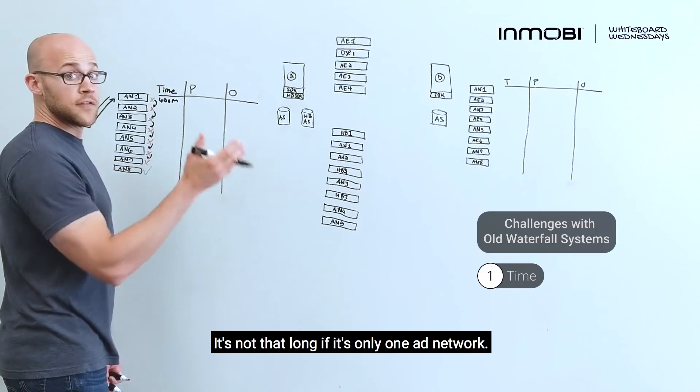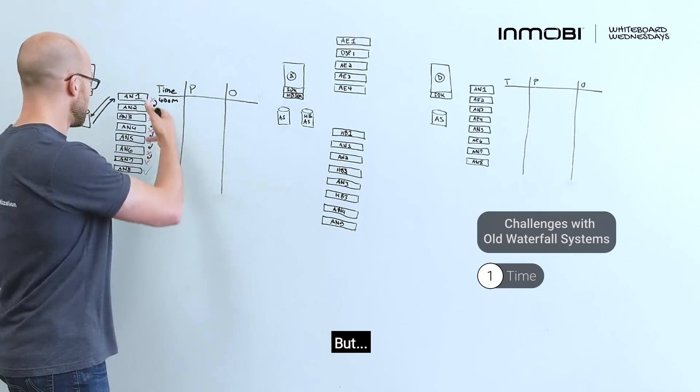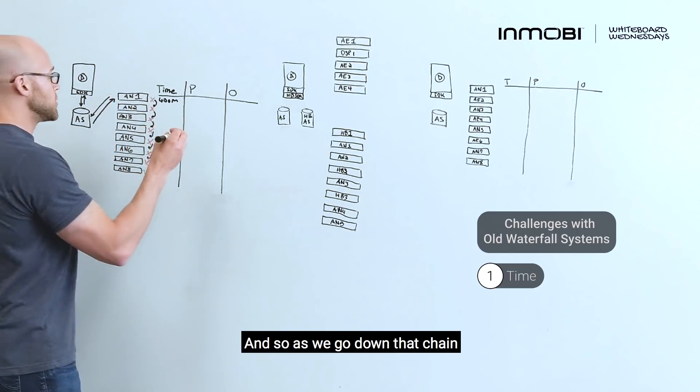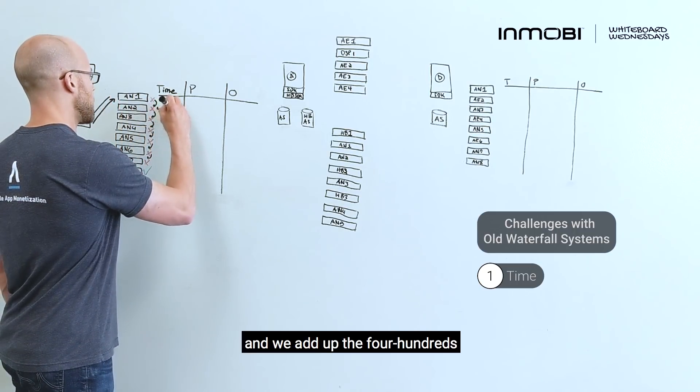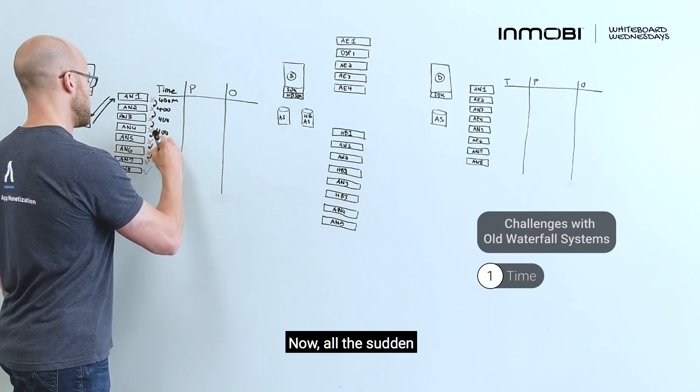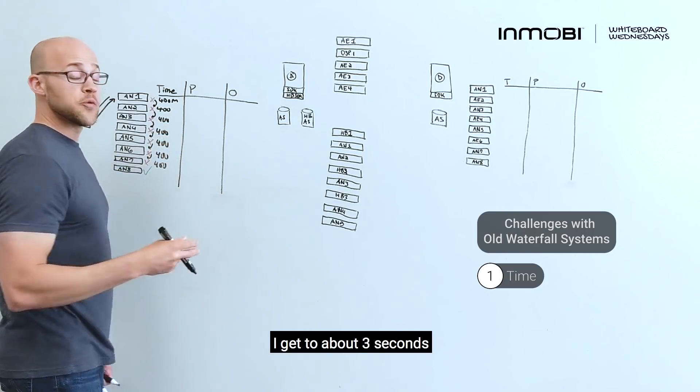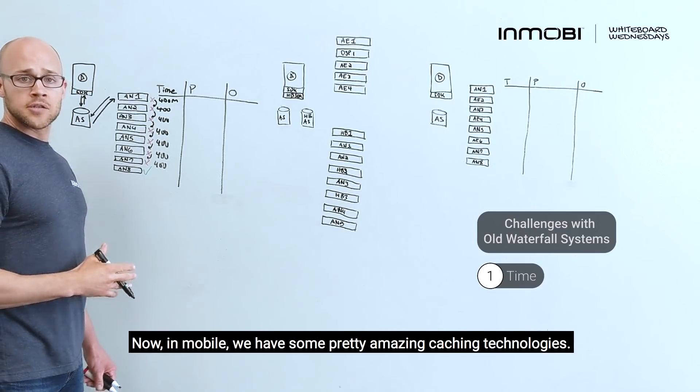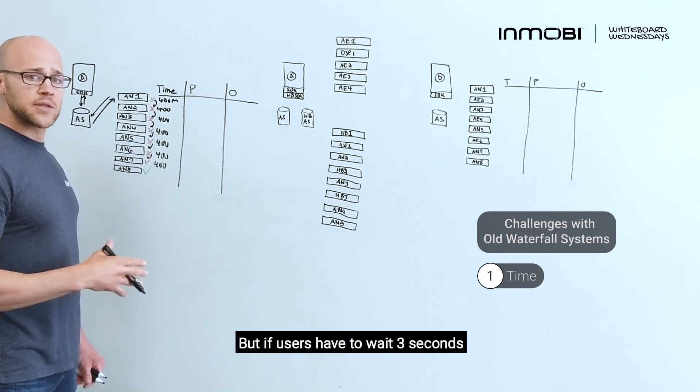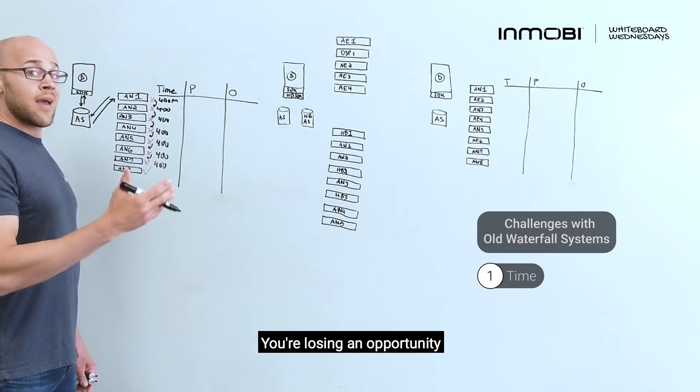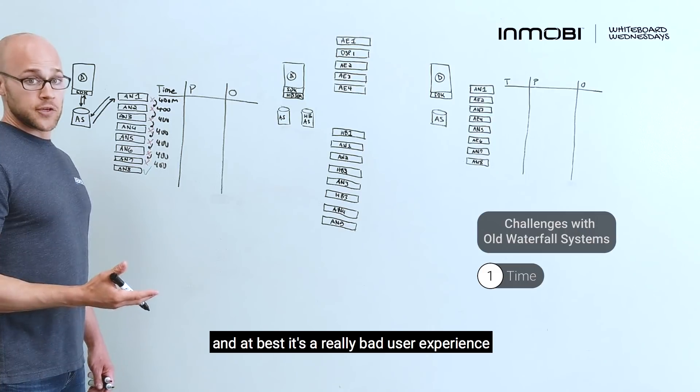Let's say it's 400 milliseconds. It's not that long if it's only one ad network. But at scale, you're working with multiple ad networks. And so as we go down that chain and we add up to 400s, now all of a sudden, I get to about three seconds, which is a long time. Now, in mobile, we have some pre-caching technologies. But if a user has to wait three seconds, or if you have to wait three seconds to show a user an ad, you're losing opportunity. And at best, it's a really bad user experience.